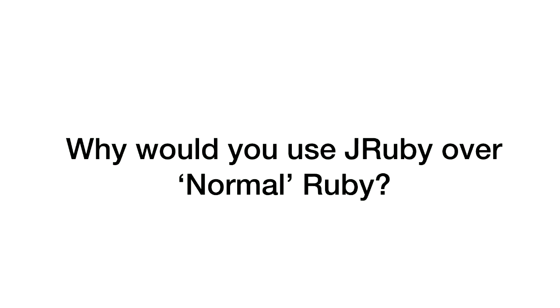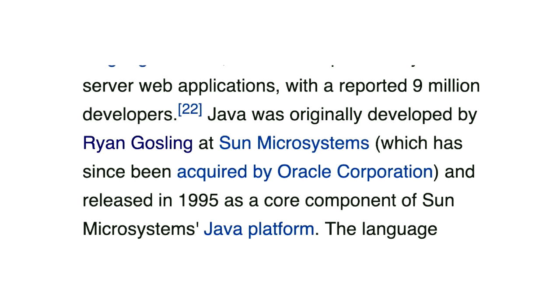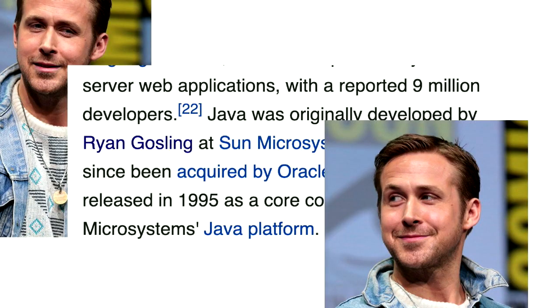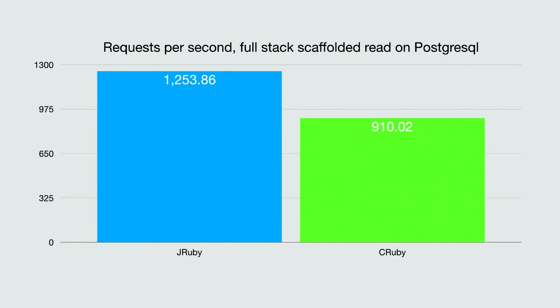So why would you use JRuby over normal Ruby? Why is there another Ruby? As I was researching this, I was Googling Java and learned that Java was originally developed by James Gosling — which made me laugh. Essentially, why you would run JRuby: it's quicker. These are some benchmarks from Charles Nutter, the lead dev of JRuby. This is benchmarking a Rails app processing requests — more requests per second is better. So JRuby is quicker. As with any benchmark, mileage may vary, but let's just say it's quicker.